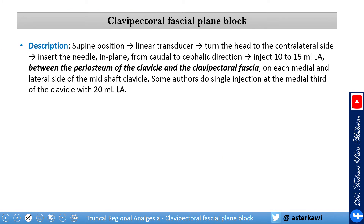So how do we do this? Position your patient in a supine position. Use a linear transducer. Turn the head to the contralateral side, just to give yourself more space. Insert the needle in-plane from caudal to cephalic direction. As prescribed in the first paper, it's a two-injection technique — medial and lateral to the fracture — giving 10 to 15 ml in each injection. Most papers use a total of 30 ml. The injection has to be between the periosteum of the clavicle and the clavipectoral fascia. Some authors use a single injection at the medial third of the clavicle.